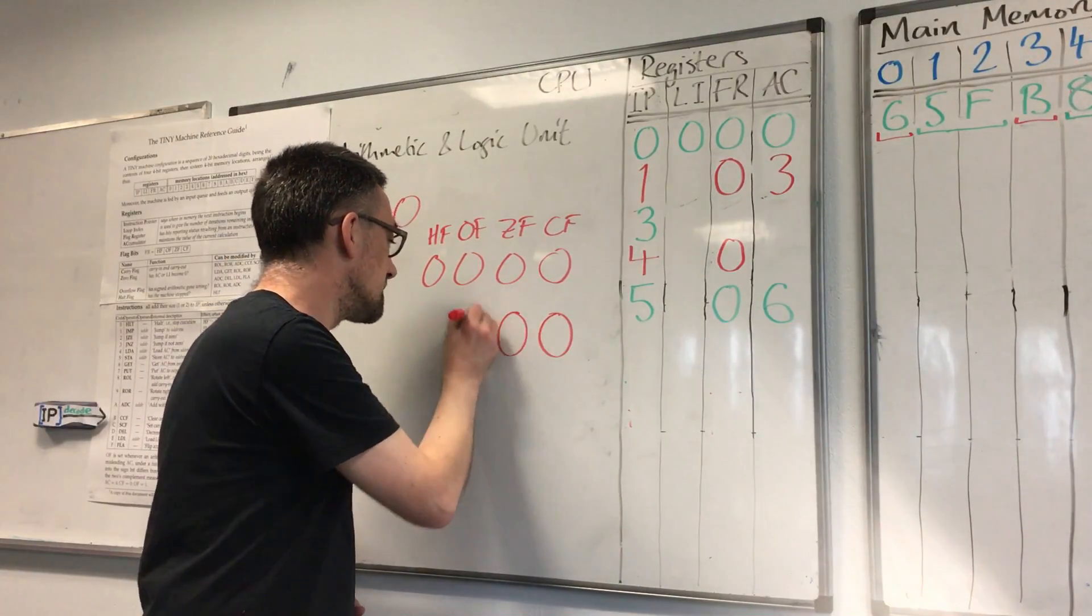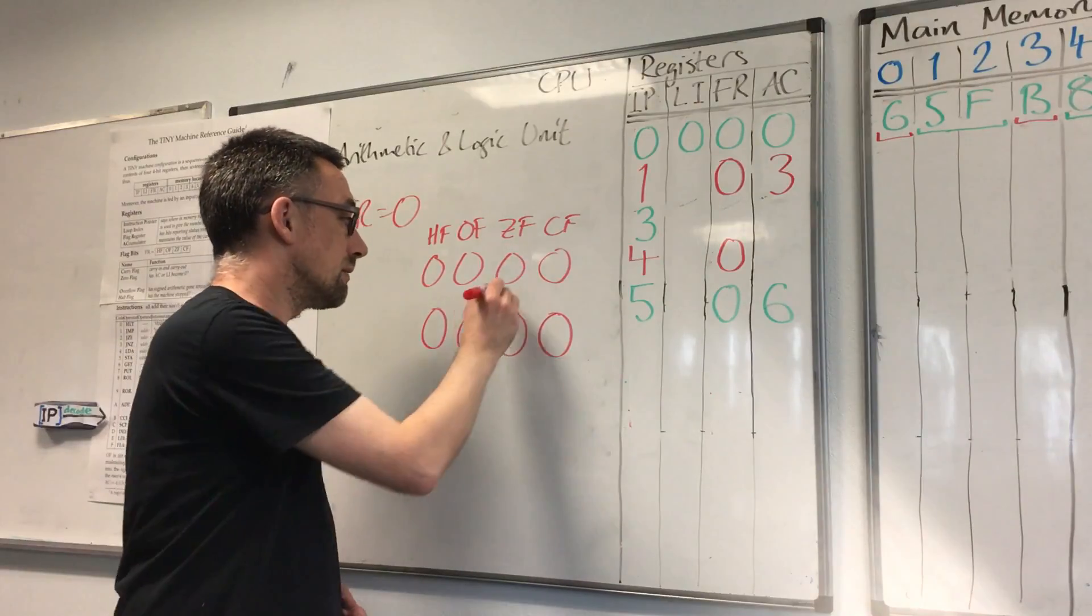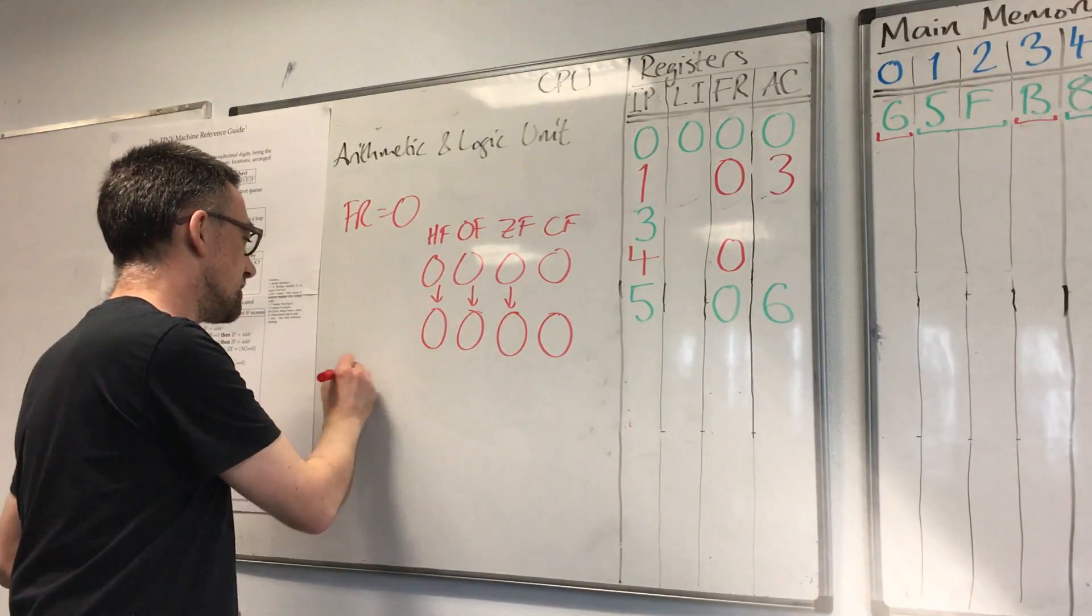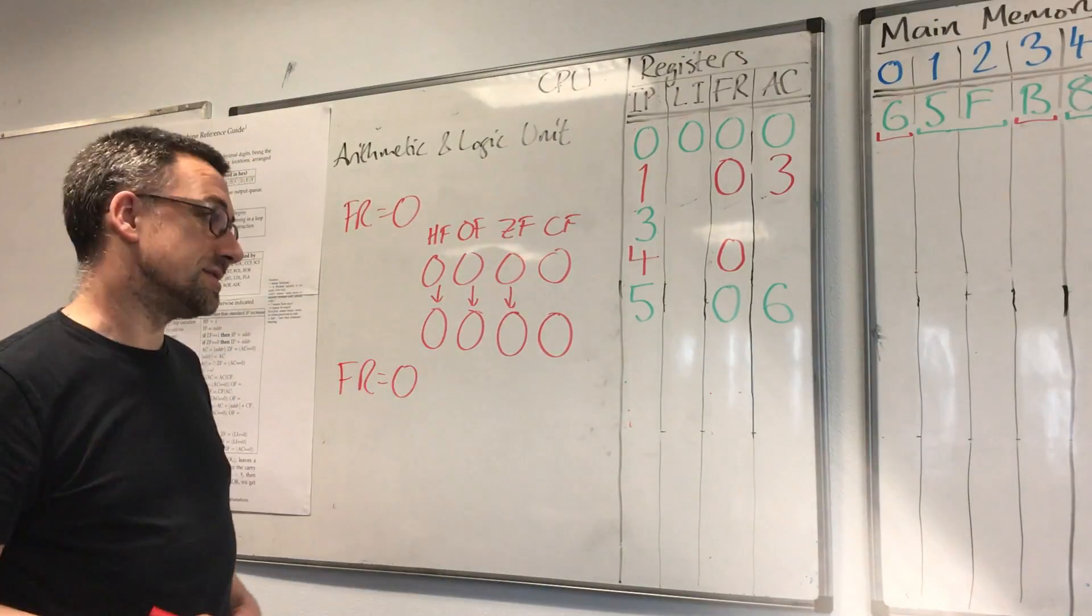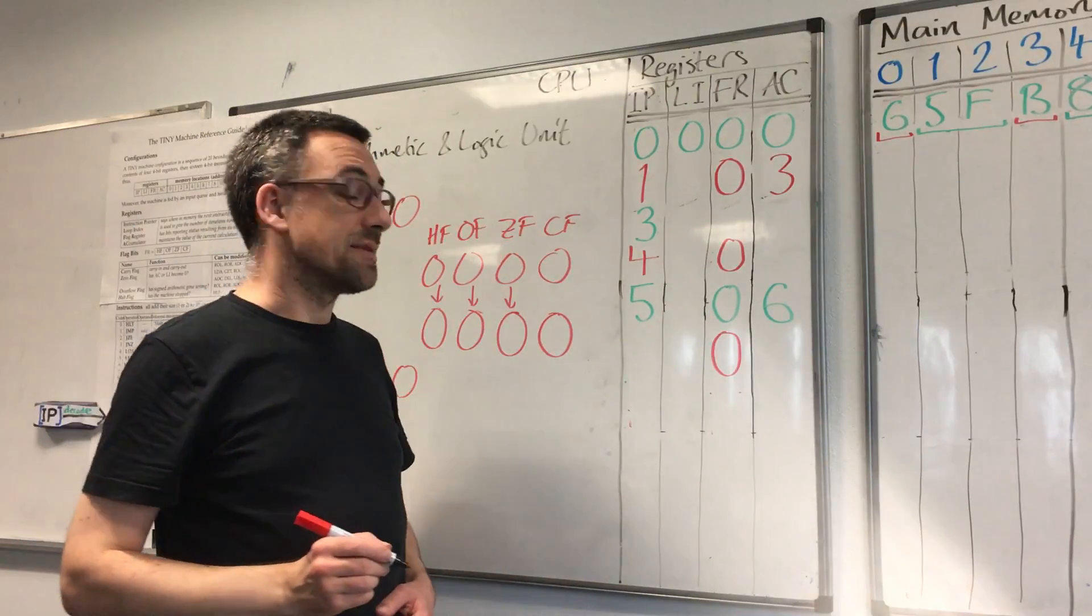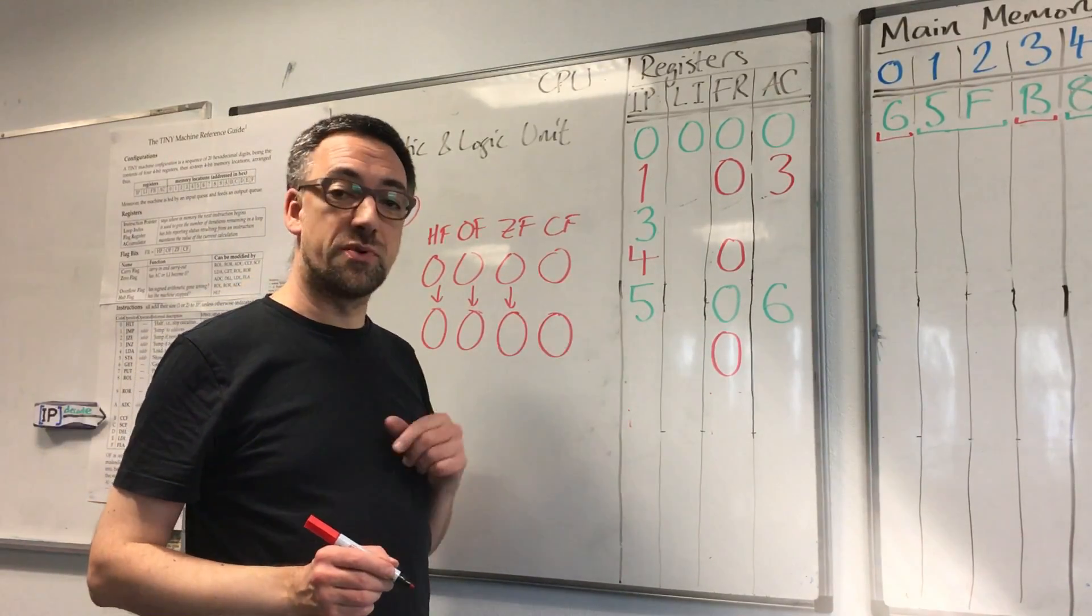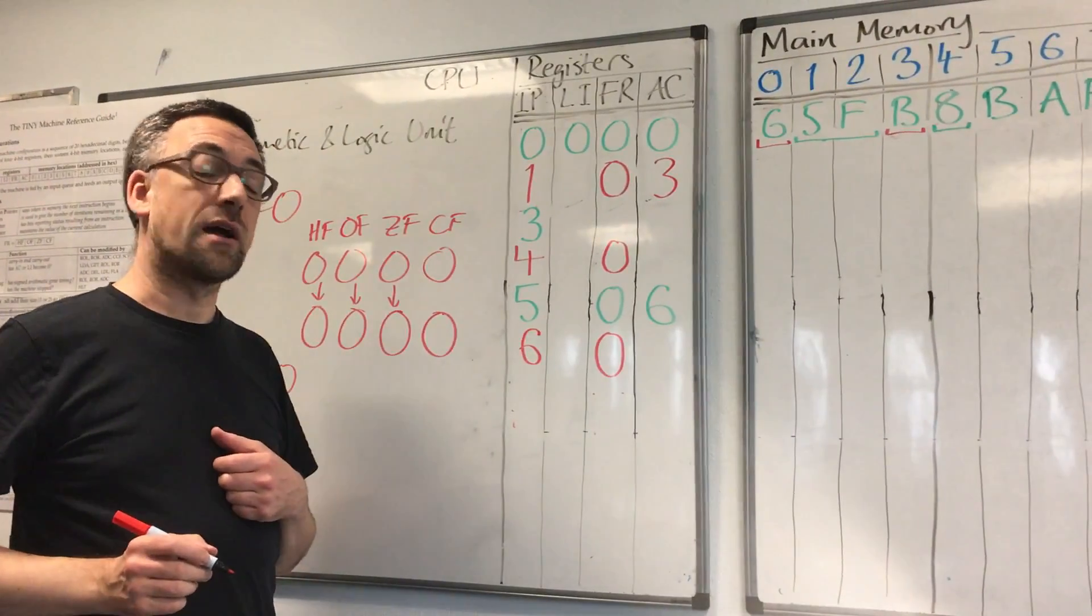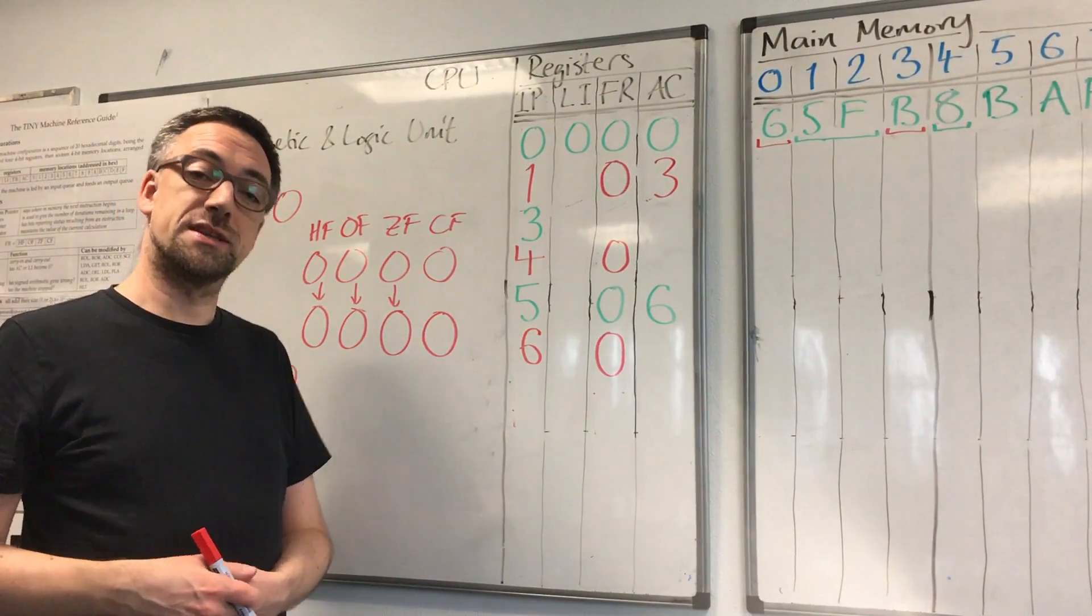And the other flags stay as they were, meaning that the flag register has overall remained 0. Then, as usual, we add the size of the instruction to the instruction pointer to get 6, as clear carry flag has no operand. That's the end of the cycle.